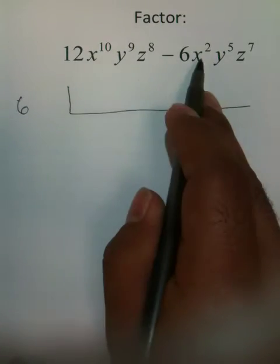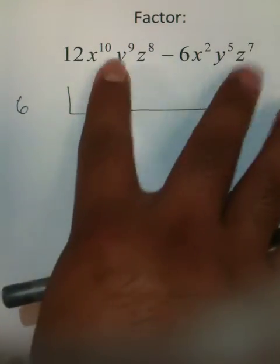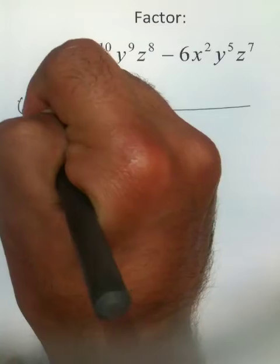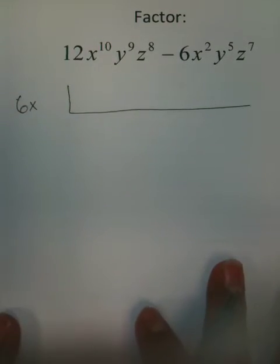From there, your x's, your y's, and your z's. Both terms have those, and so you will need to pull out some x's, some y's, and z's. But the question is, how many x's are you going to pull out?